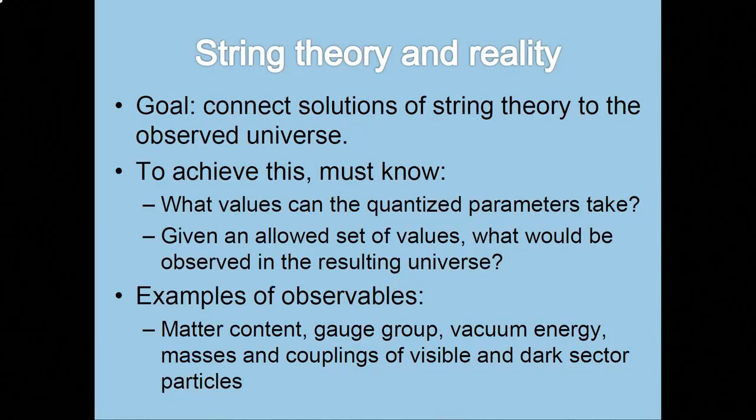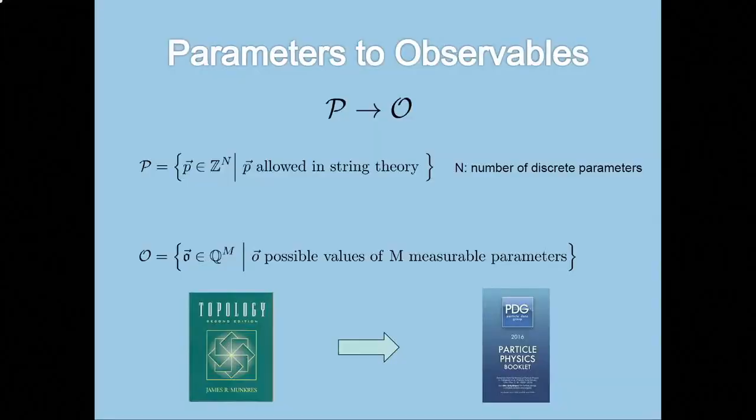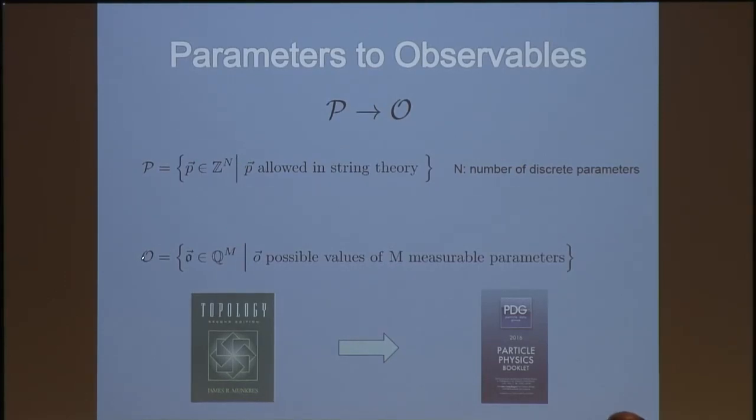So these are large discrete sets that we'd like to explore. Our goal is to connect these solutions to the observed universe. If we want to do that, what we need to know is, what values can the parameters take? They don't fill out all of Z to the N, but they fill out some subspace or some subset of Z to the N. If I give you an allowed set of values, what would be observed in the resulting universe? By observations, I just mean pretty broad stuff like, what kinds of matter fields are there? How many generations of quarks and leptons are there? What's the gauge group? What's the vacuum energy? What does the dark sector look like? What are the masses and couplings of dark sector particles?